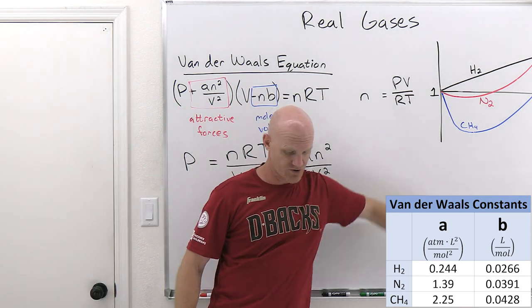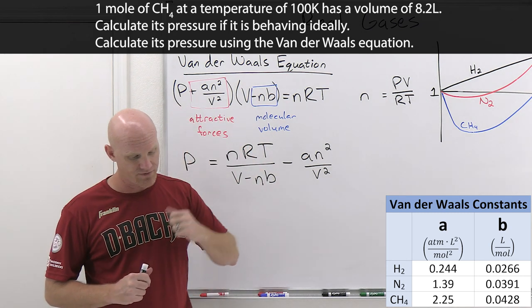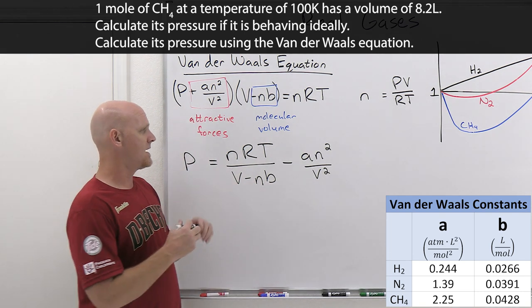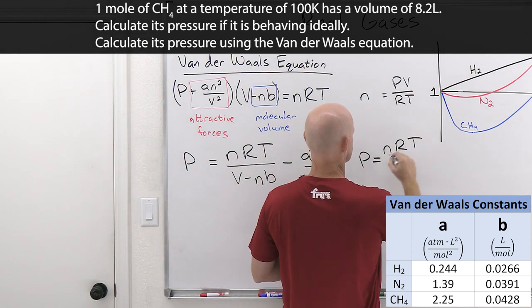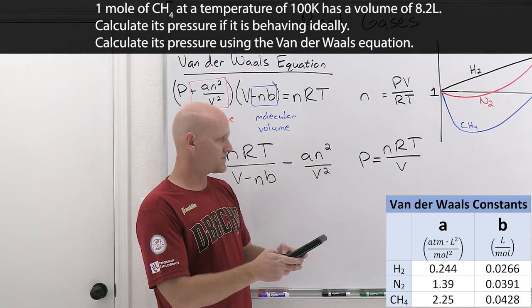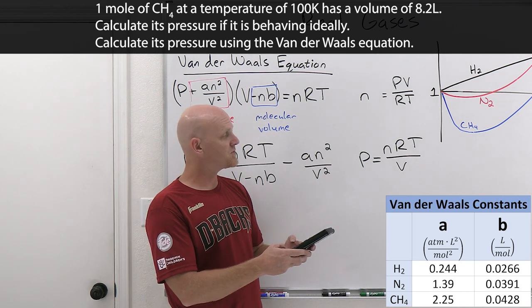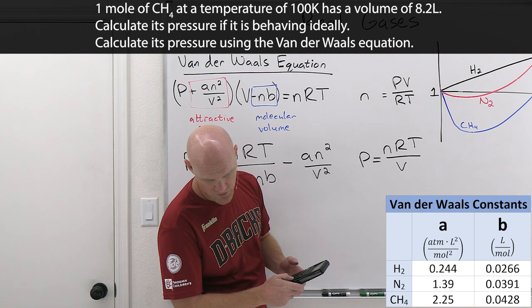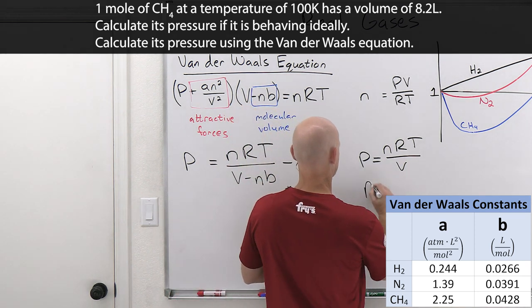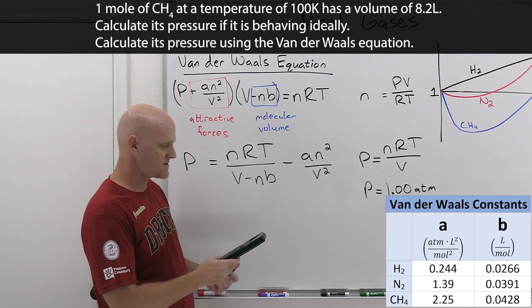I've given you a table of van der Waals constants. You've got one mole of CH4 methane gas at a temperature of 100 Kelvin and a volume of 8.2 liters. You want to calculate its pressure if it's behaving ideally, and then calculate its pressure using the van der Waals equation as well. We've got two calculations here. Ideally would be NRT over V. We'll start with the ideal one. We're told that it is one mole of CH4, times 0.08206 for the universal gas constant, then times 100 Kelvin. Then we're told it has a volume of 8.2 liters, so divided by 8.2, and we get almost exactly one atmosphere. It's 1.0007, which I'll round to three sig figs at 1.00 atmospheres.